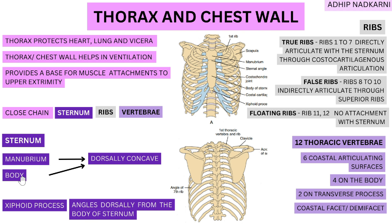Coming to the first component — the sternum. The sternum can be divided into the manubrium, the body, and the xiphoid process. The manubrium and body are posteriorly or dorsally concave, whereas the xiphoid process is angled dorsally and downward from the body and manubrium.